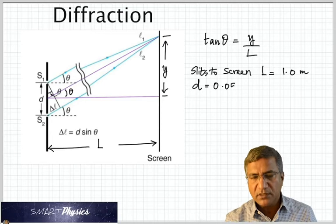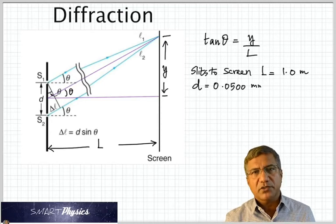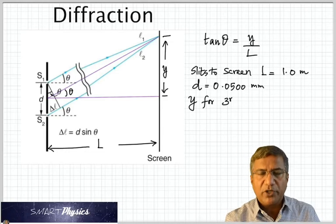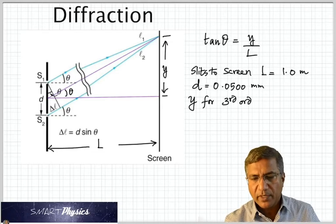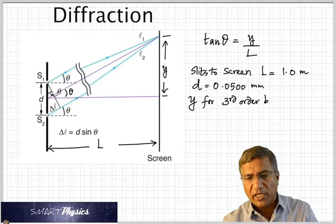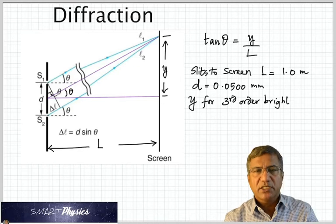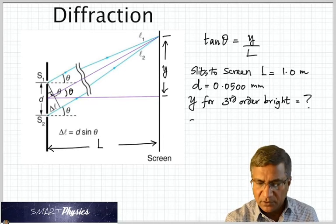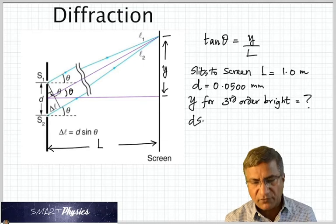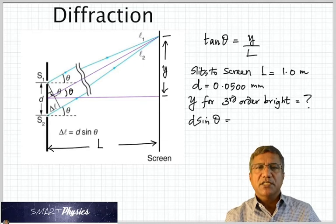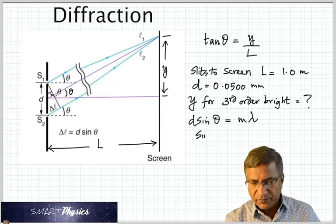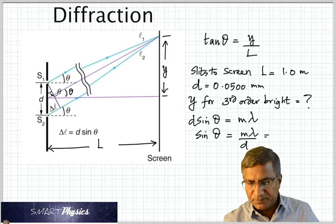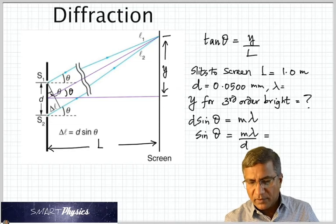So here is one question. Distance from the slits to screen is 1 meter. And distance between the slits is 0.0500 millimeter. And we're asked to find the Y for the third order bright. Now we're talking about third order bright, maxima. So remember that. Now we use the condition for maxima first, which is D sin theta is equal to M lambda. We will try to find sin theta from which we will get theta.